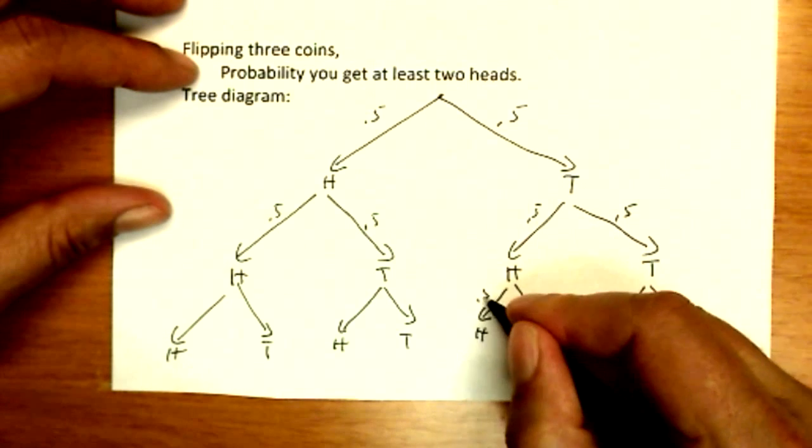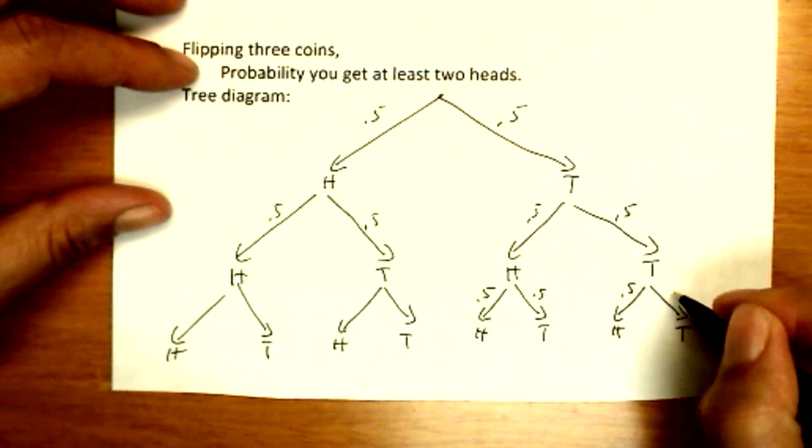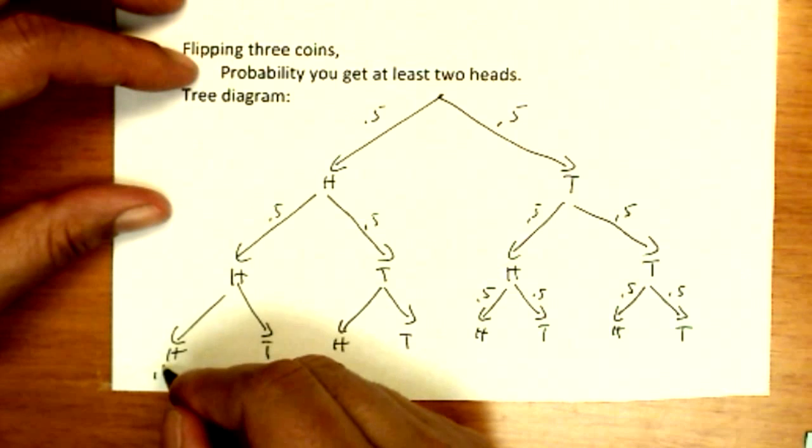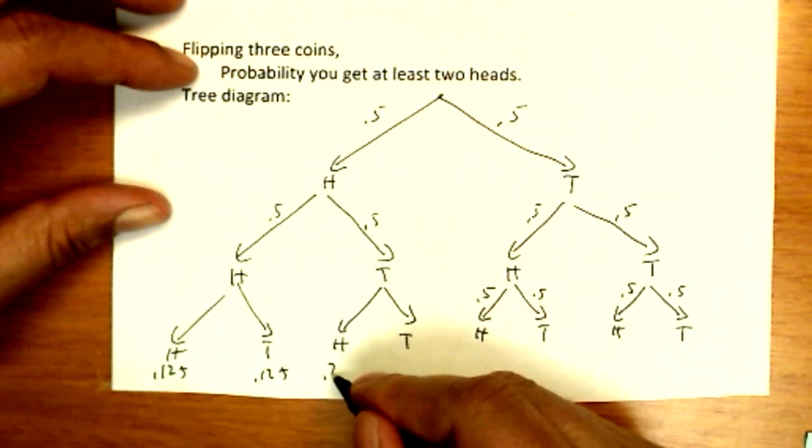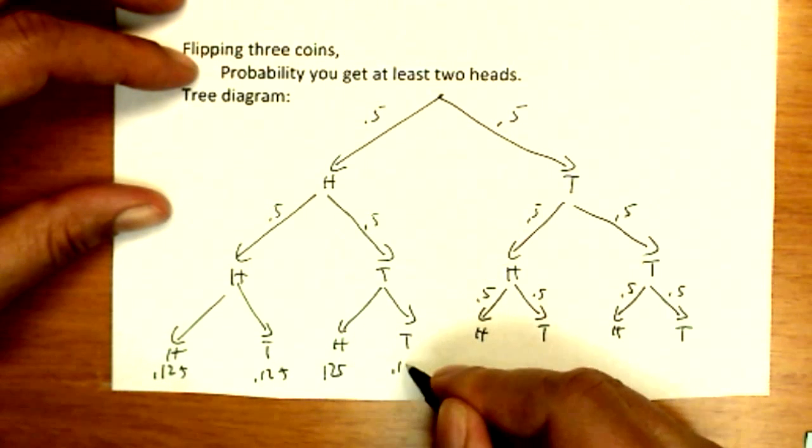And since they are independent I can multiply. So 0.5 times 0.5 times 0.5, 0.125 for every one of my outcomes here.